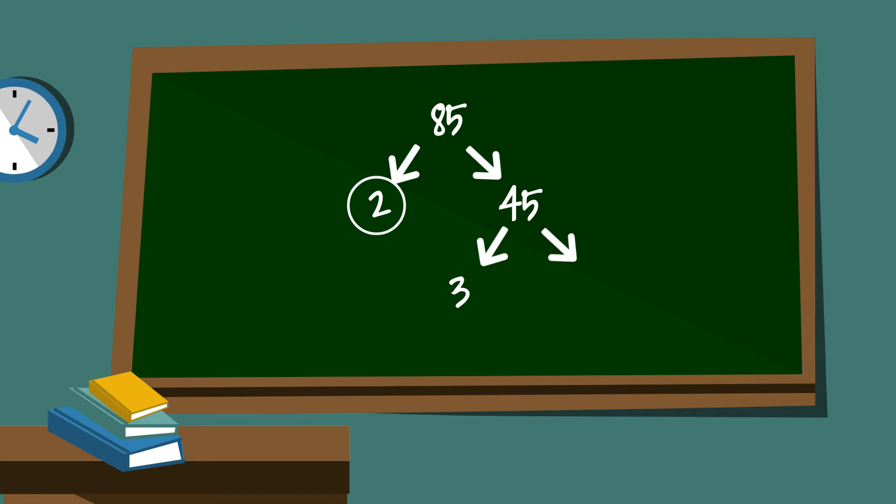3 times 15. I will circle the 3 because it is prime. Now 15 is divisible by 3. 3 times 5 is 15. I will circle both of those.